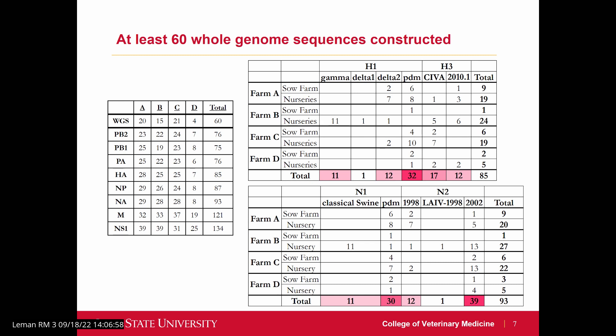Is the diversity table for HA or for what gene of the virus? The top one's for HA, broken into H1 and H3, and the bottom is for NA — N1 and N2.